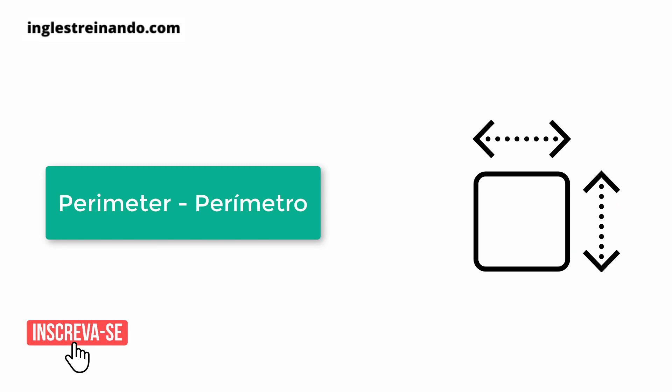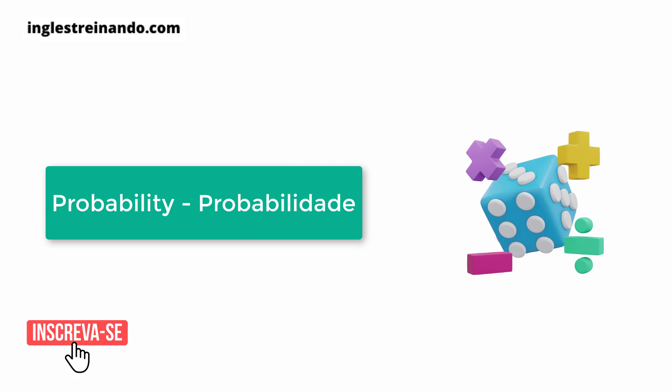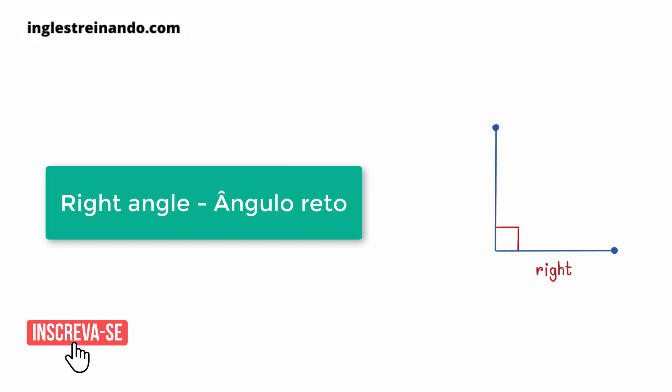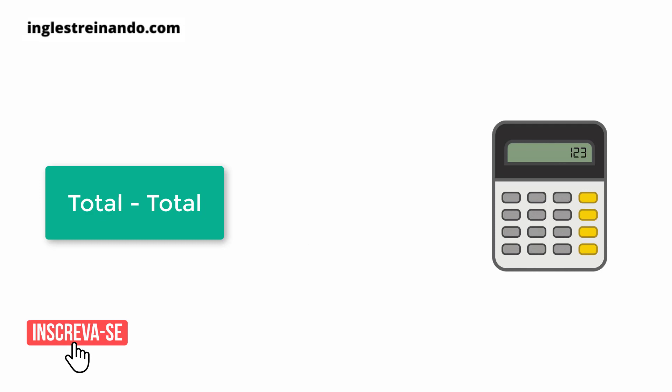Perimeter. Positive number. Probability. Right angle. Theorem. Total. Vertical.